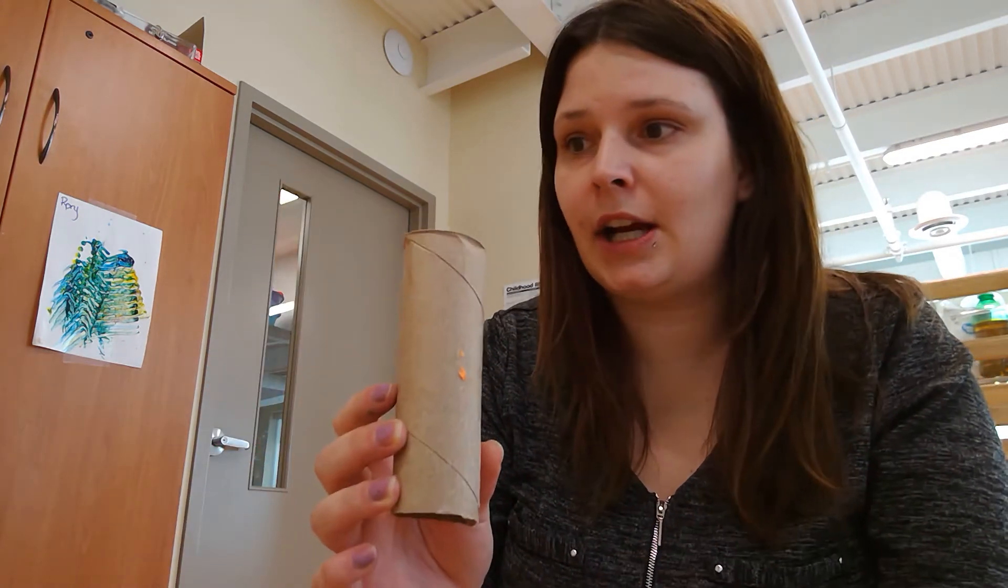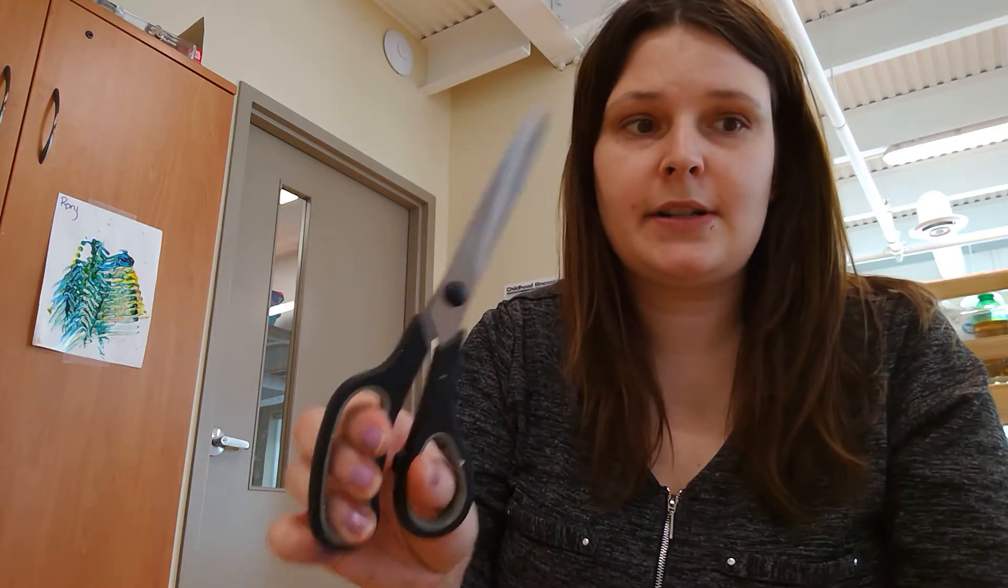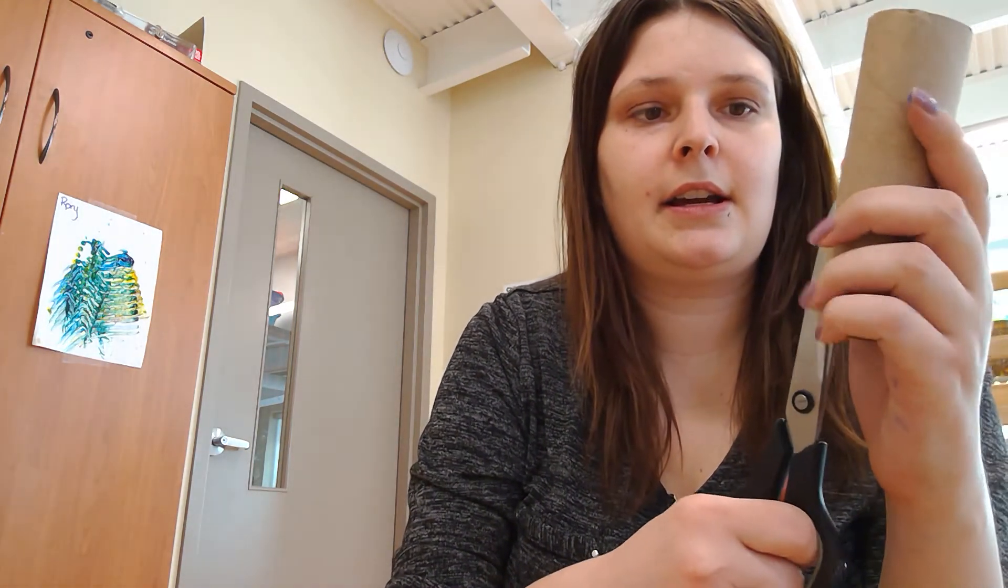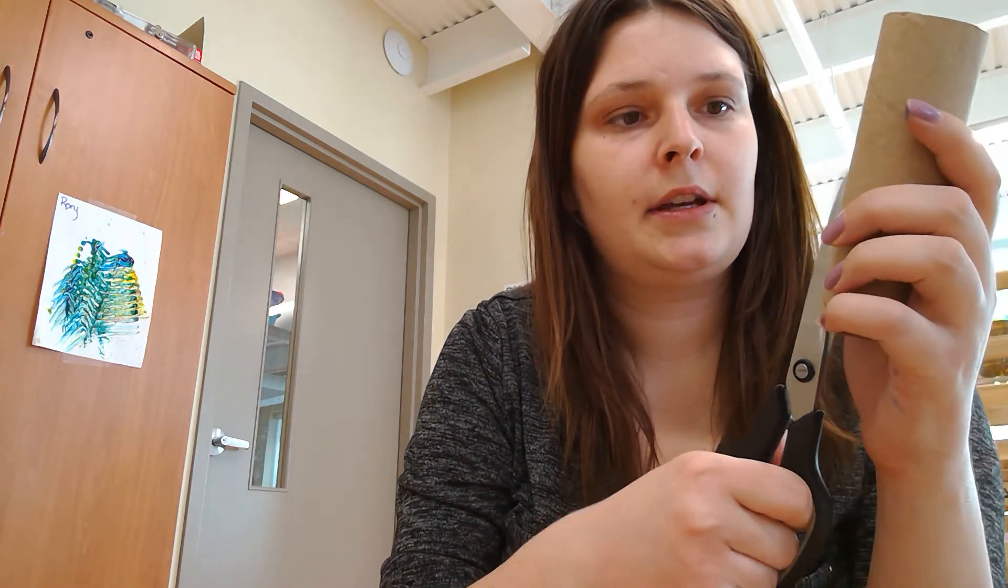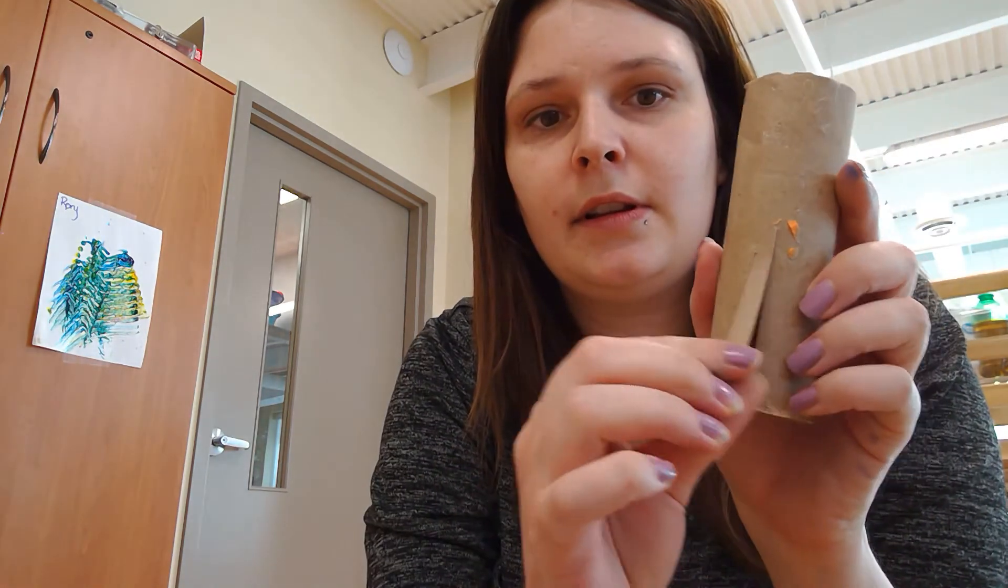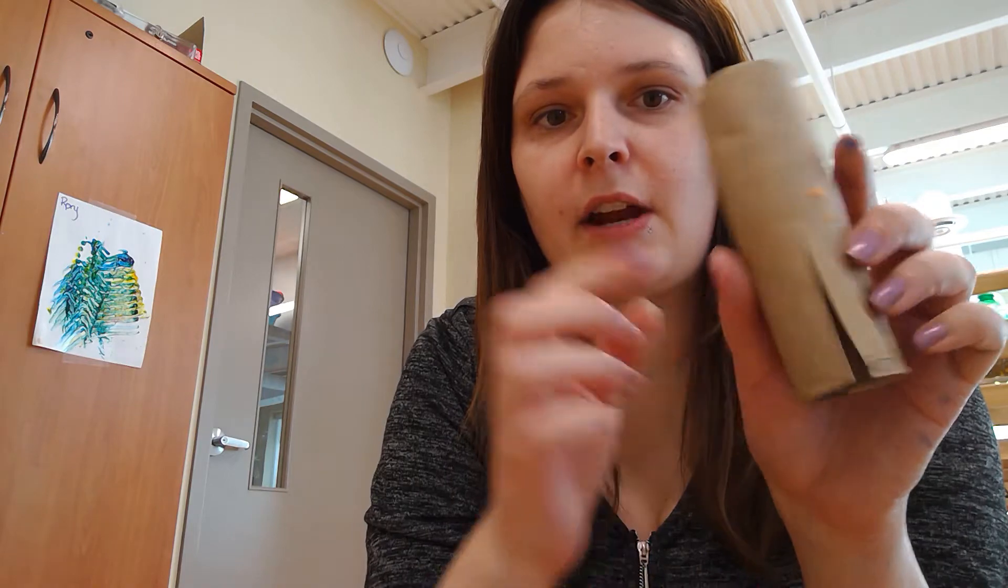The next one we're going to do is making a paintbrush out of a toilet paper roll. So I've got my toilet paper roll here and I'm going to use my scissors and cut up towards the middle of my toilet paper roll and create little flaps, and we're going to do that all the way around.